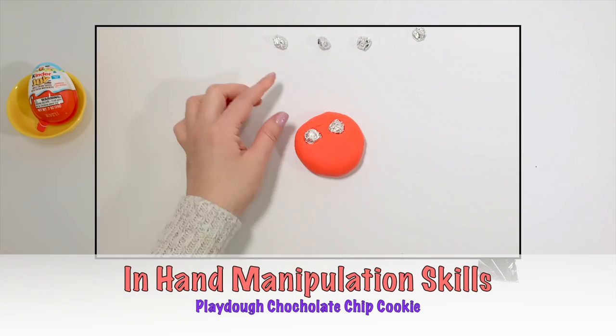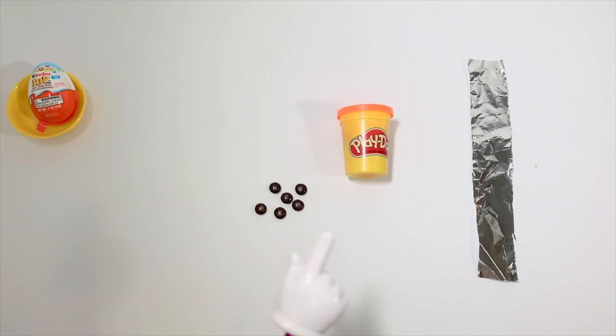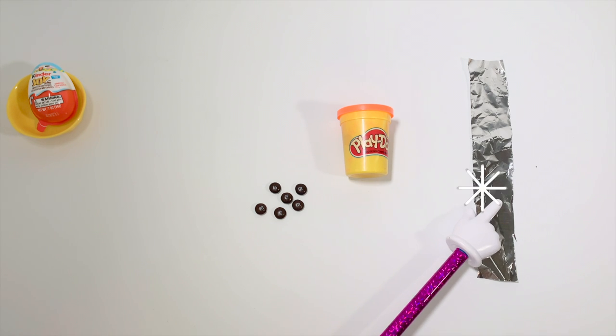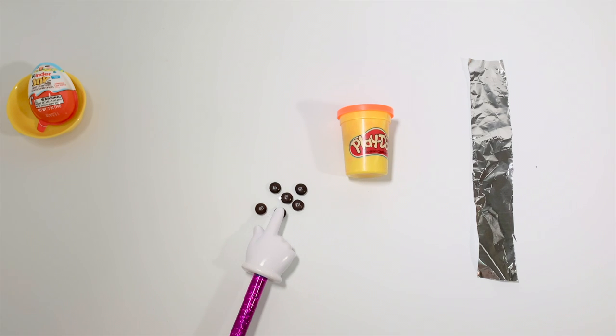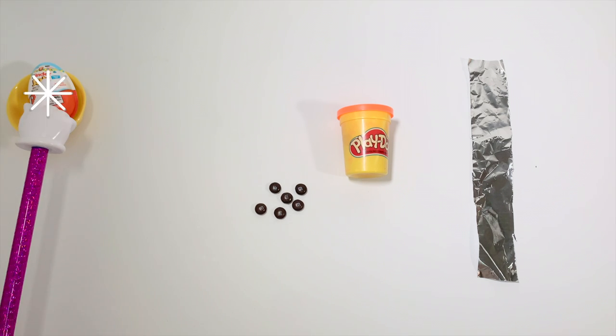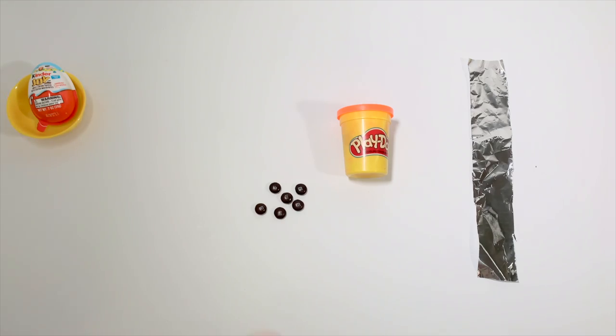Let's make a chocolate chip cookie using play-doh and some M&Ms. You need to get a piece of foil paper, play-doh box and six pieces of M&Ms. When we finish, we'll open the Kinder Egg.